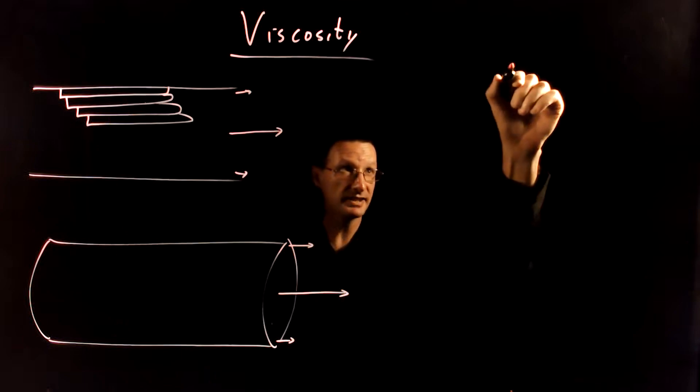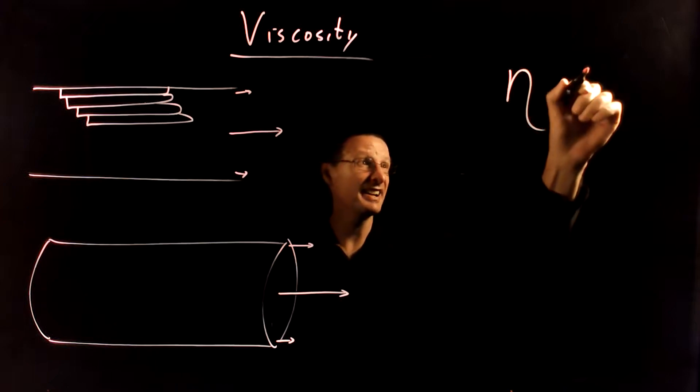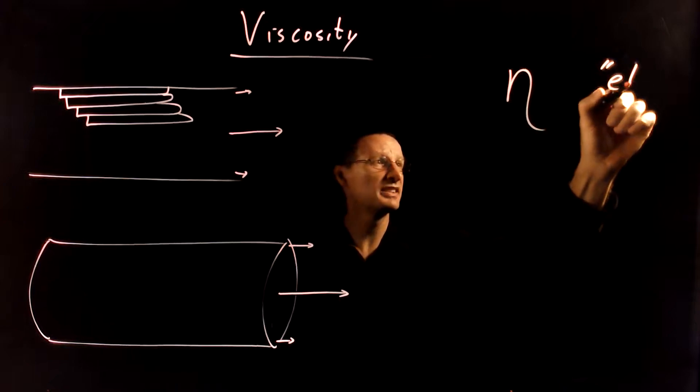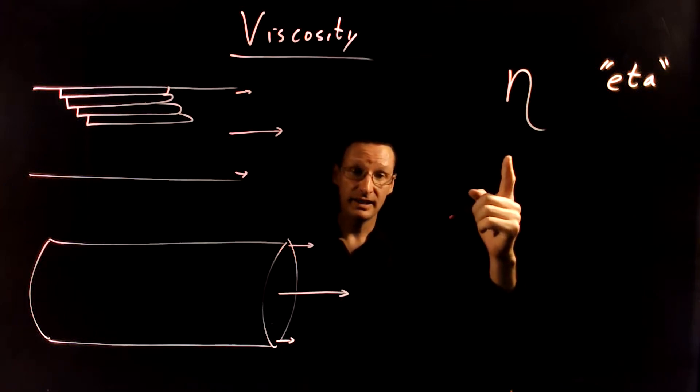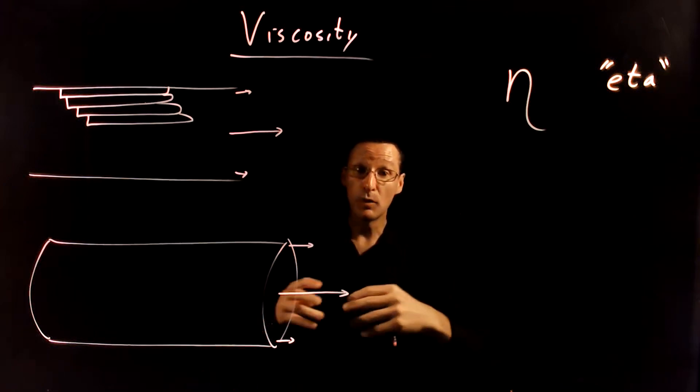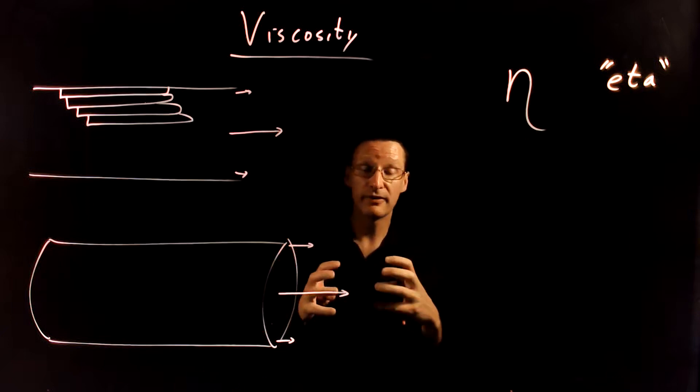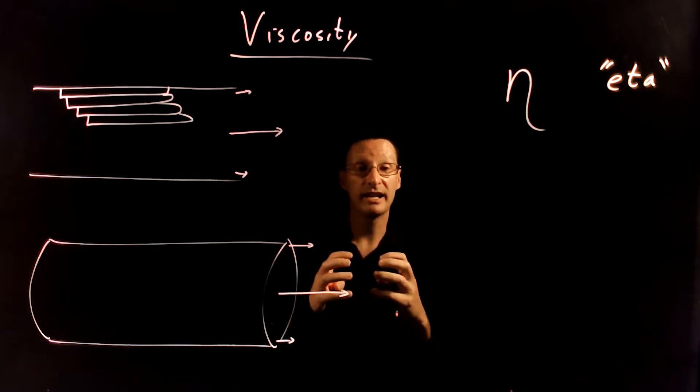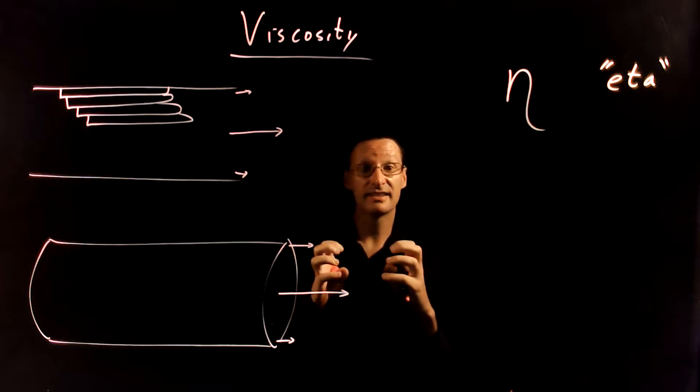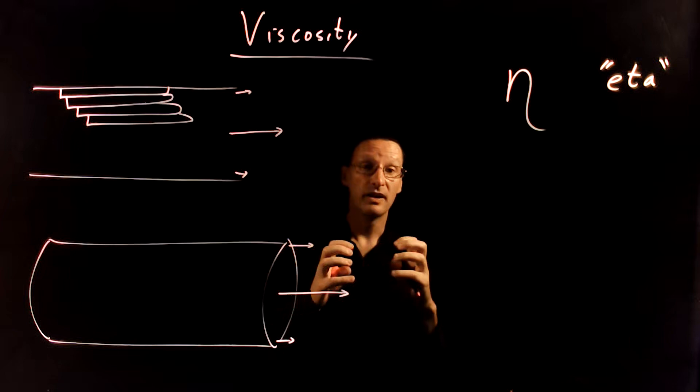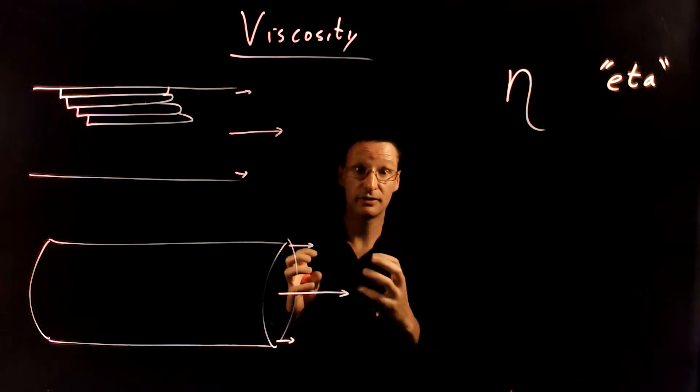We characterize viscosity with this Greek letter eta, which looks like an N but it's not. The higher the viscosity, the more internal friction there will be. This is a property of the fluid itself. Motor oil has a higher viscosity than water. Things like honey have a much higher viscosity - they're very difficult to get to flow.